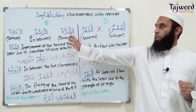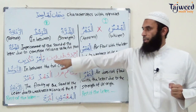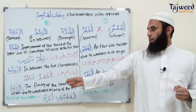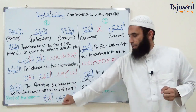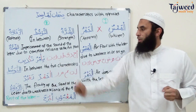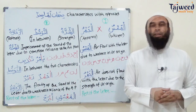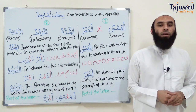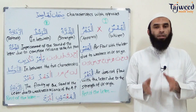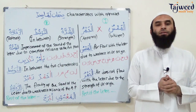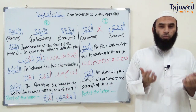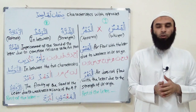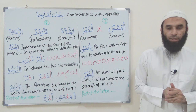So three groups of letters: al-Shidda — these eight letters where the sound does not flow. Al-Rakhawa on the opposite side. And al-Tawasut in the middle. Inshallah, in the next lesson we're going to start Huruf al-Istifal and Huruf al-Isti'la — Tarkiq and Tafkhim — the heavy letters and the light letters. Until then, Jazakumullah Khairan. Assalamu alaikum warahmatullahi wabarakatuh.